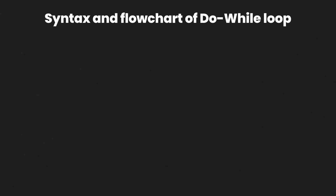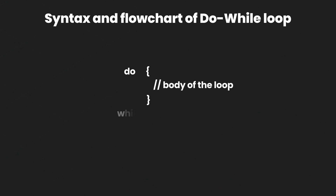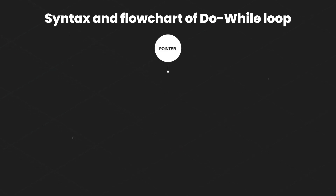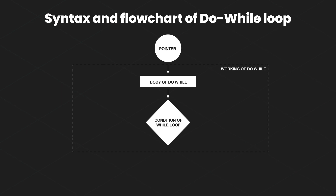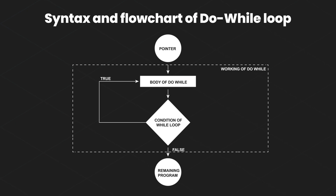The syntax and flowchart of the do-while loop are displayed on screen. The block of code to be repeated is placed inside the do body, and the condition is placed after it with the keyword while. The program pointer enters, executes all instructions within the do block, then checks the condition. If true, the body executes again; if false, the program breaks away from the do-while loop and continues executing the remaining parts.